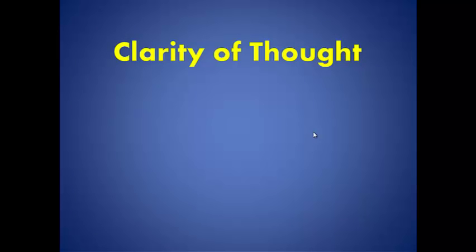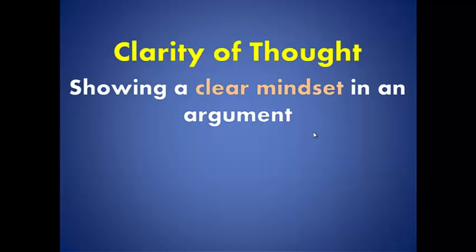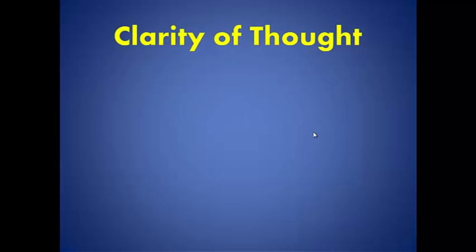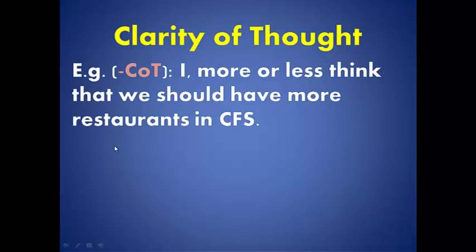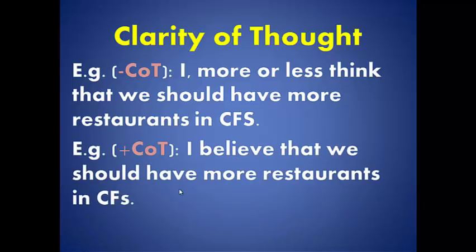The second form is clarity of thought, which refers to showing a clear mindset when you argue. A critical thinker knows what he says and shows that he knows what he says. For example, without clarity of thought: 'I, more or less, think that we should have more restaurants in CFS.' The phrase 'more or less' shows the person is not sure or does not have a strong stand. When you apply clarity of thought, it becomes: 'I believe that we should have more restaurants in CFS.' This shows the arguer has a strong and clear expression.